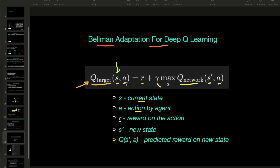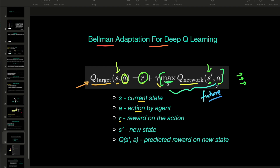On the current state, agent takes an action A. For that action, agent receives the reward R, and then agent lands on the new state S prime. Then again, on the new state, agent can take all the possible actions, and we will pick the action that gives the maximum reward. This is the future reward in the next state, multiplied by the discount factor, which determines how much importance to give to the future reward.